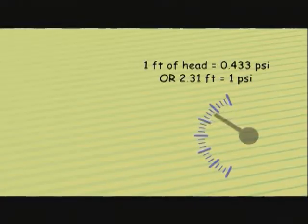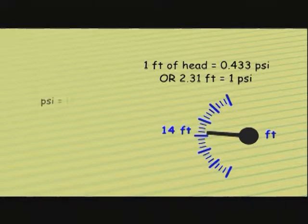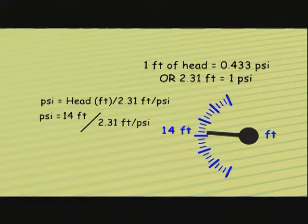If we have a pressure gauge reading of 14 feet, how many PSI is that? We take the 14 feet divided by 2.31 feet per PSI. The feet cancel out and we are left with 6.06 PSI.